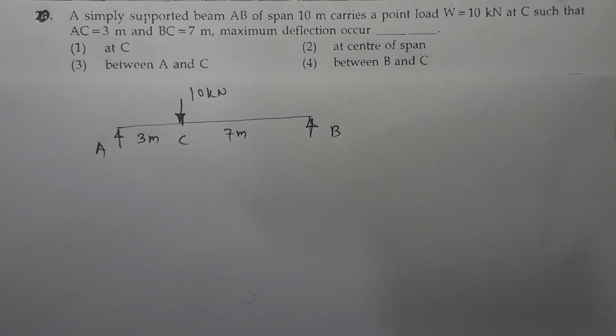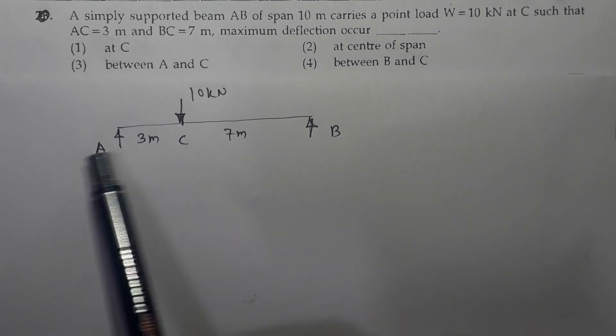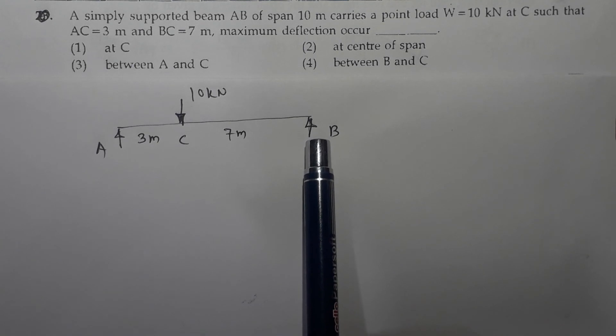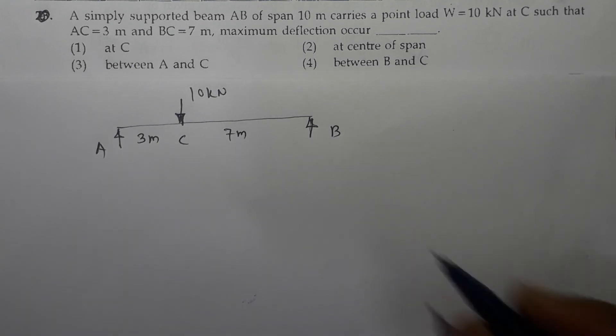Next question: A simply supported beam AB of span 10 meter carries a point load W equals 10 kilo Newton at C such that AC is 3 meter and BC is 7 meter. And the question is asked regarding the maximum deflection. Now it is a similar question which was asked in MES 2018. Now AC and BC are these two subspans. It is obvious that the maximum deflection is going to appear between B and C. Option 4 is the correct option.